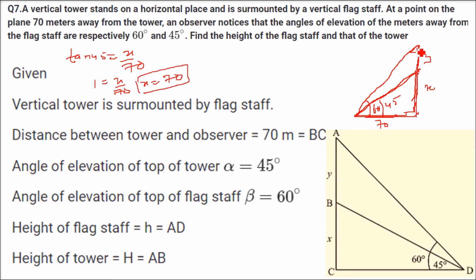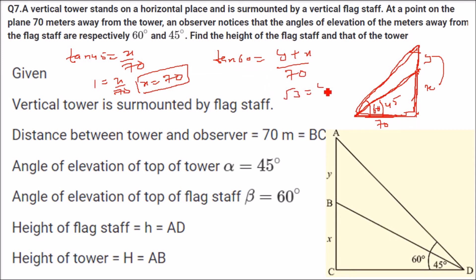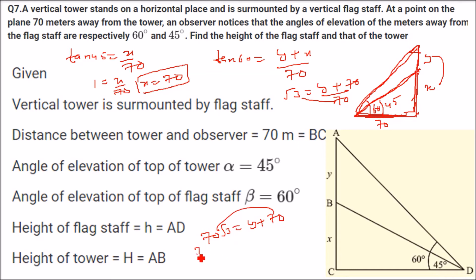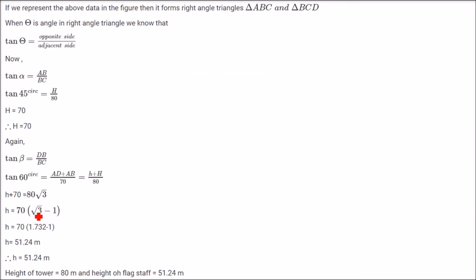Now taking the bigger triangle with angle 60 degrees: tan 60 equals (y + x) by 70. Root 3 equals (y + 70) by 70, so 70 root 3 equals y + 70. Therefore y equals 70 root 3 minus 70, which is 70(root 3 minus 1). Using root 3 as 1.732, the flagstaff height is approximately 51.24 meters. So the tower is 70 meters and the flagstaff is about 51.24 meters.